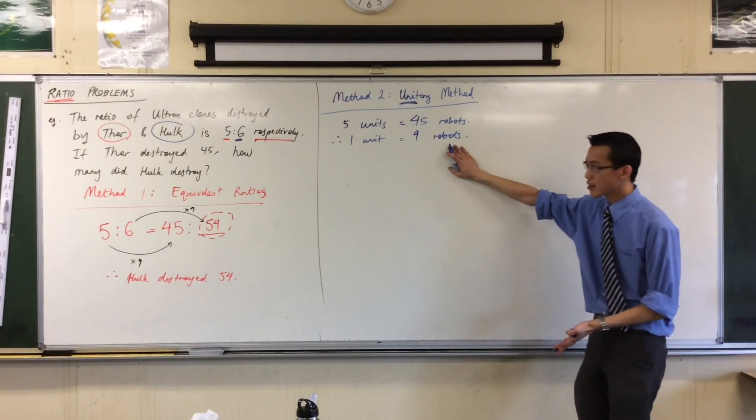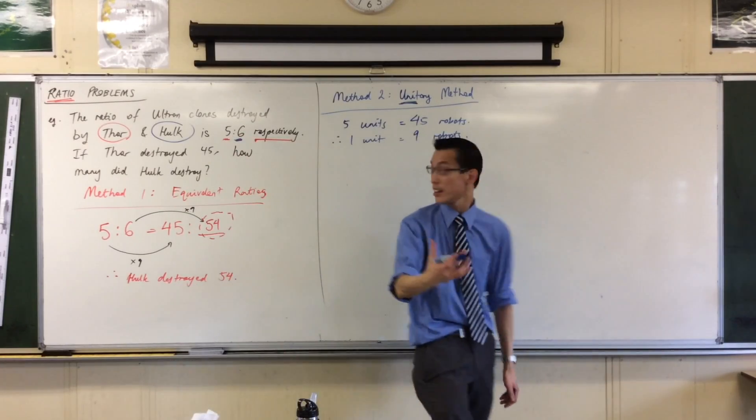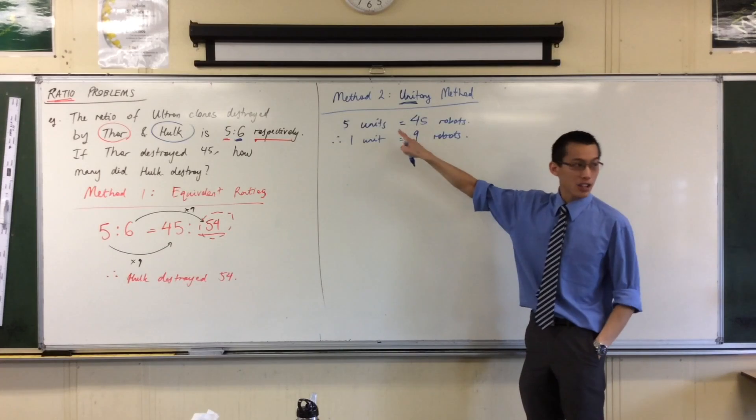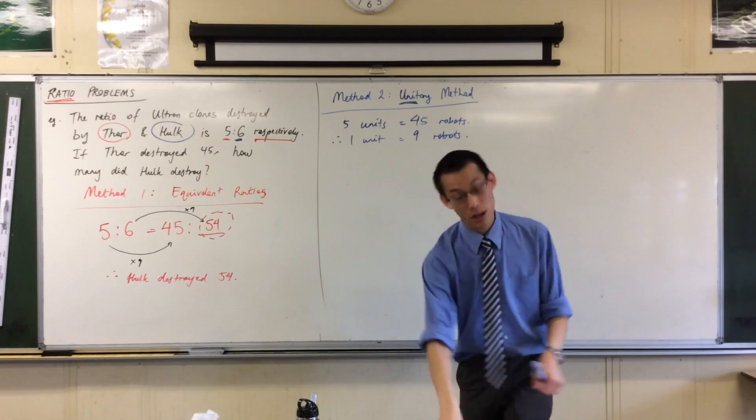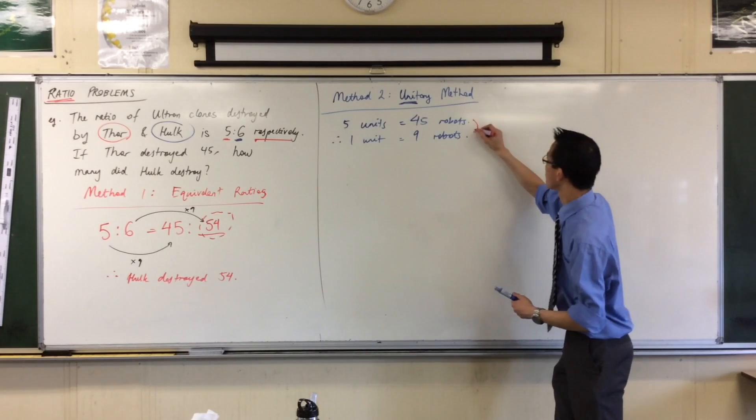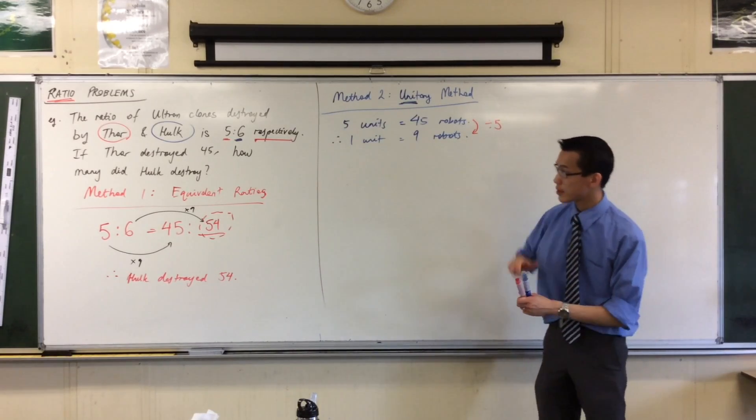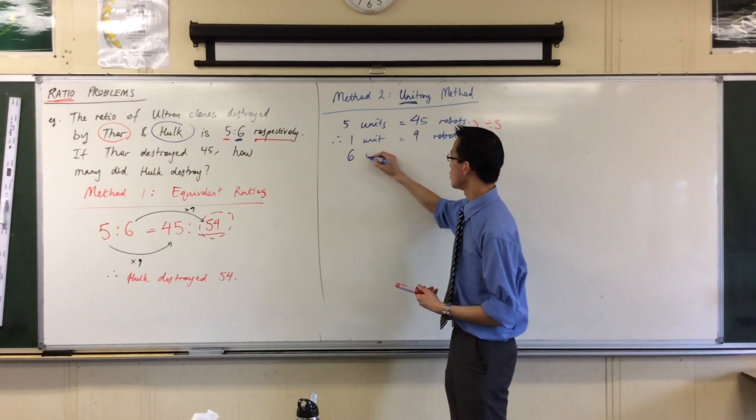Now that I know what that is, I can work out any number of like, if this was five to six, or if it was five to 60, if Hulk was having a good day, or whatever it is. I just want to go to whatever that second number is. So from line one to line two, I divided by five. And now what I want is Hulk's share, which was six units. So I'll say six units.